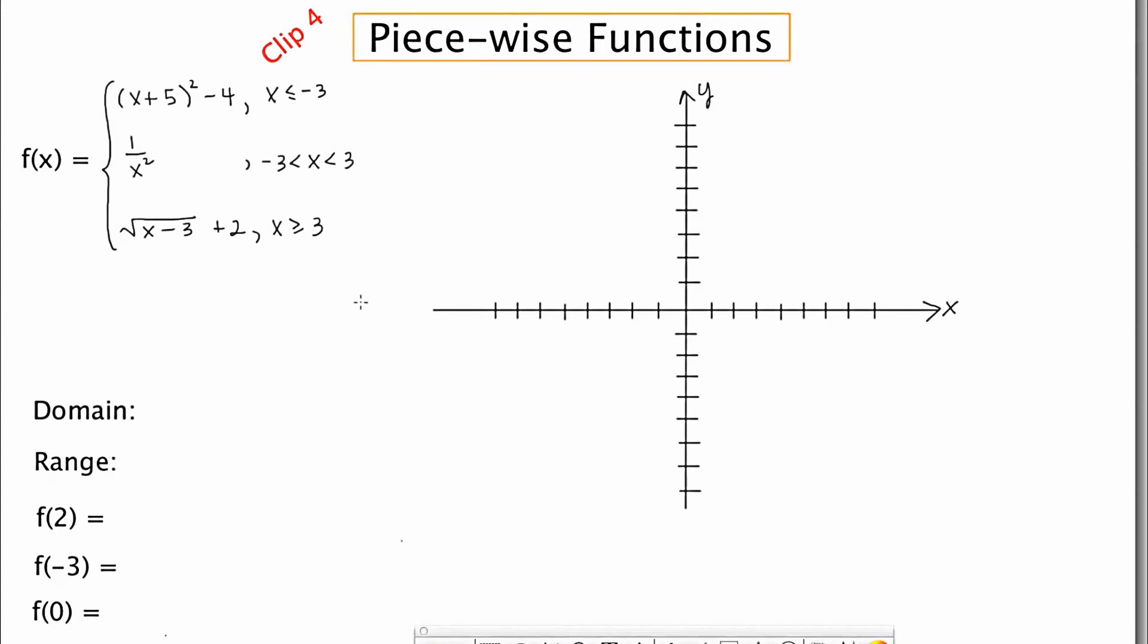So you'll notice, to start, this particular piecewise function has three pieces. The first of which is a parabola that has been shifted five units to the left and four units down. So the translation point would be negative five, negative four. Maybe we'll just put this as a little reminder.